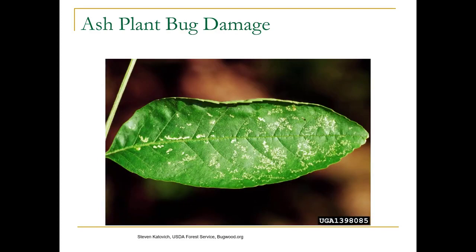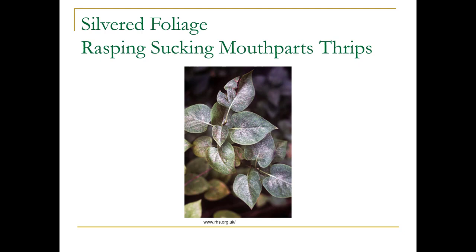Here's some stippling on an ash leaflet from a plant bug — these are true bugs. Silvered foliage would be from rasping, sucking mouthparts, and the only insect in this group is thrips. And thrips is always plural — don't ask me why, but that's the way it is.